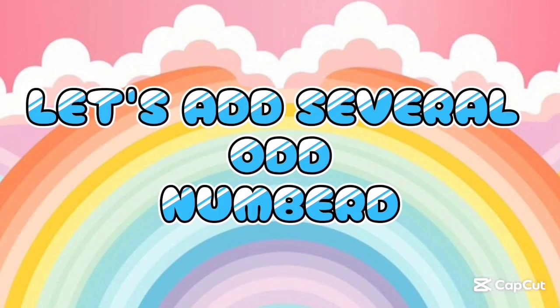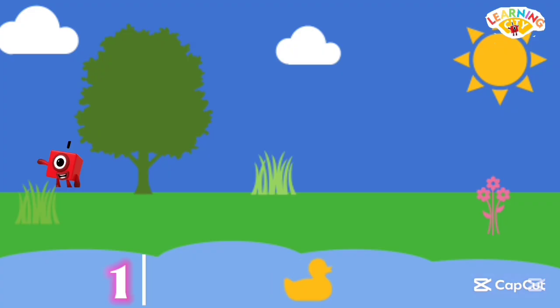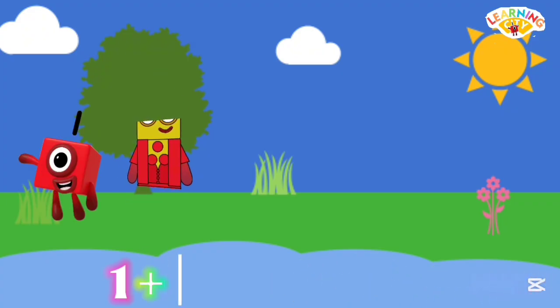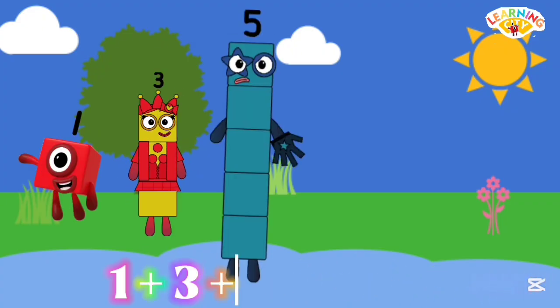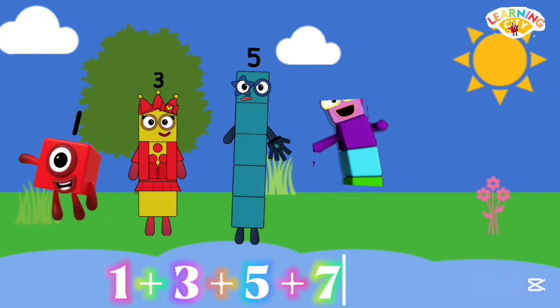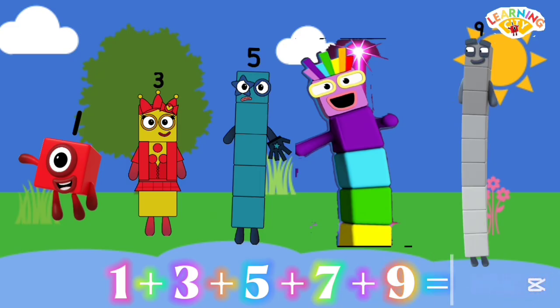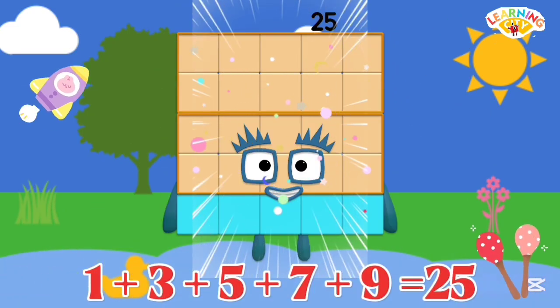Hello kids, let's add several odd numbers. 1 plus 3 plus 5 plus 7 plus 9 equals 25.